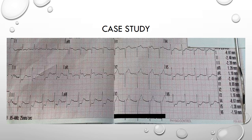The most obvious finding we see from this ECG is the ST depression in the inferior leads of 2, 3 and AVF, and also in the left-sided leads of V4 to V6, and we can see that there. So what's going on?